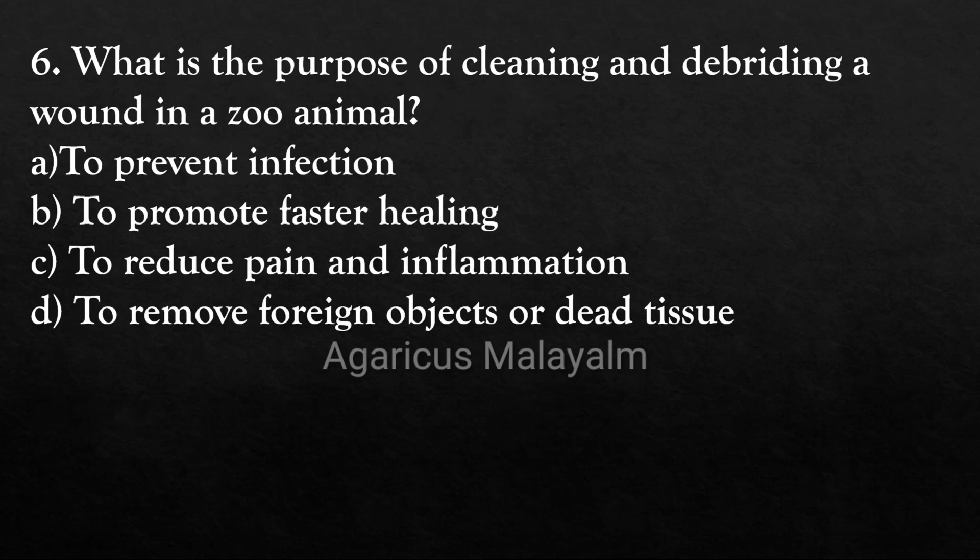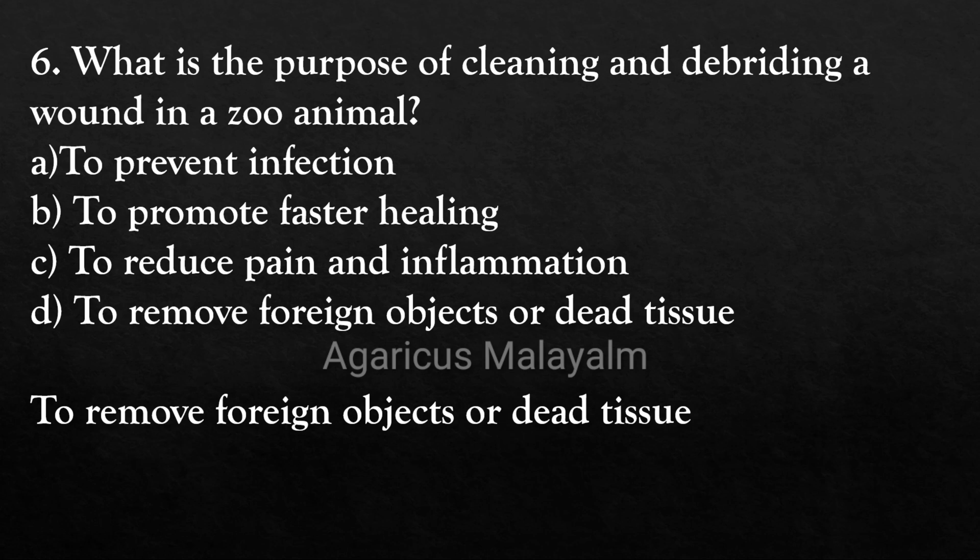Sixth question: What is the purpose of cleaning and debriding a wound in a zoo animal? Option A: to prevent infection. Option B: to promote faster healing. Option C: to reduce pain and inflammation. Option D: to remove foreign objects or dead tissues. Correct answer: Option D, to remove foreign objects or dead tissues.